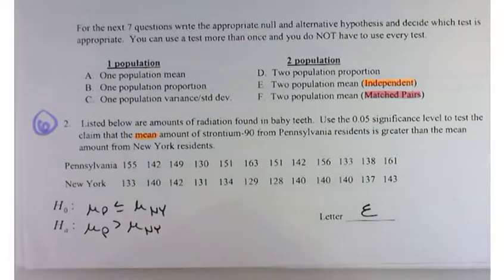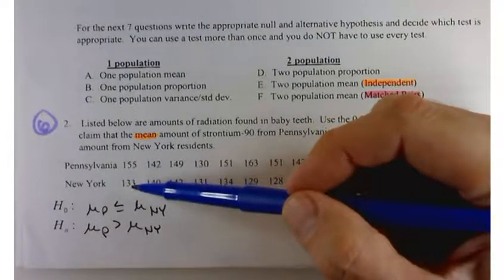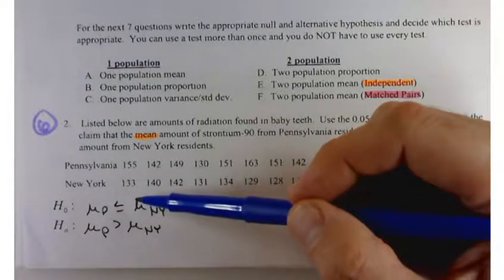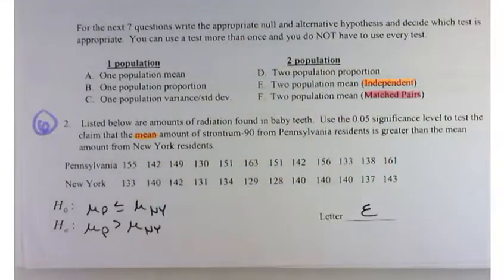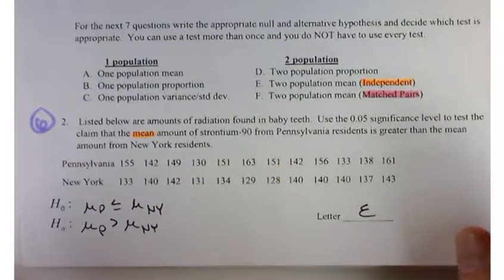How can I tell the difference? What would it mean if they were matched pairs? They affect each other. But, presumably, how much radiation somebody has in their teeth in Pennsylvania is not going to have really anything to do with what's going on in New York. If these were twins, or husband and wife, or you're measuring some person in the morning and evening, that's the kind of situation that leads to a matched pair.